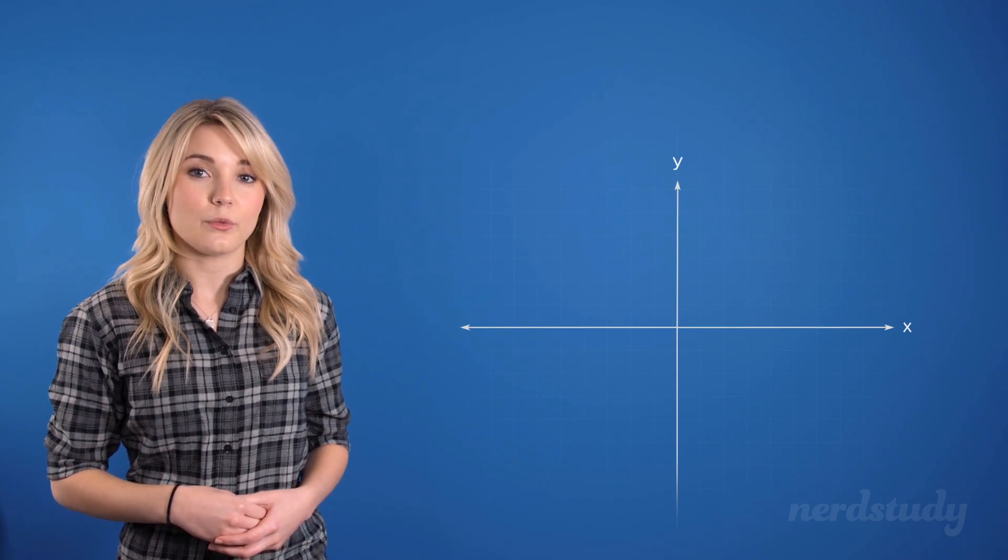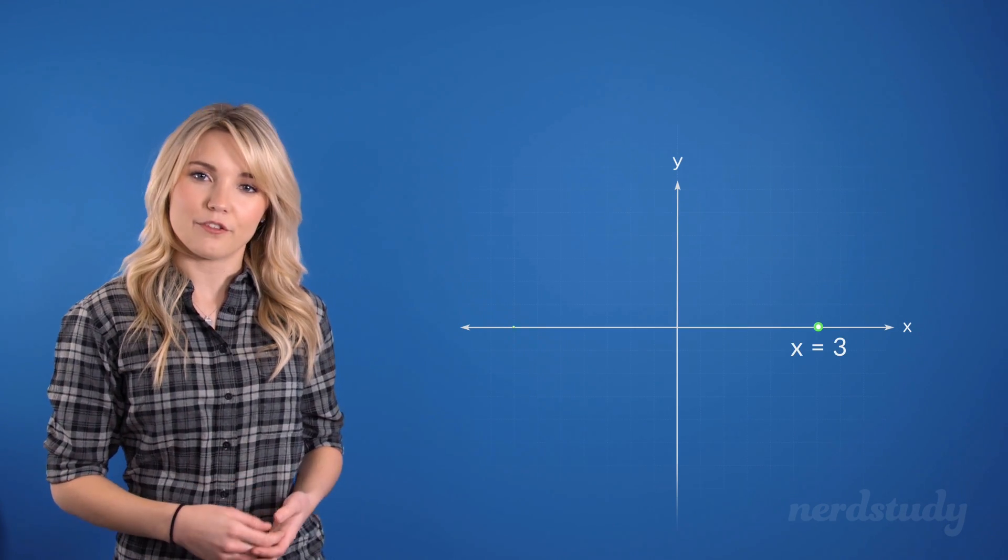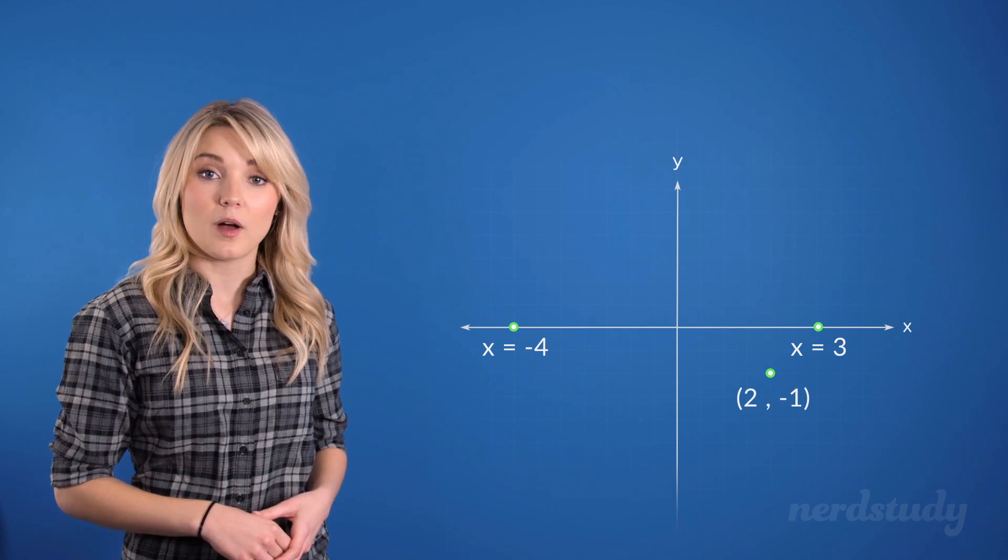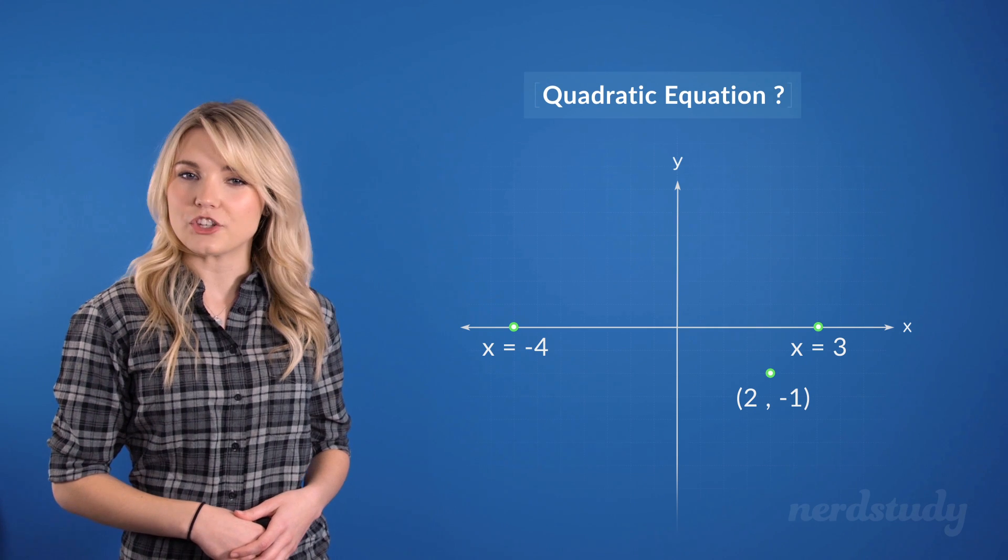So if I said to you that I'm thinking of a quadratic equation with its roots at 3 and negative 4, and that one of the points on the parabola is 2, negative 1, how would you go about finding the quadratic equation?